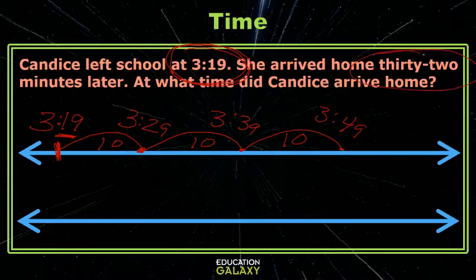Of my 32 minutes, I've jumped 10, 20, 30 — I only have 2 left. So I count 1, 2, which will be 3:50 and then 3:51.